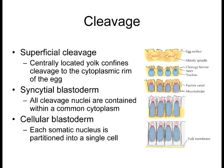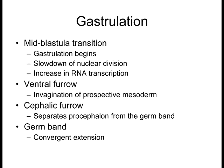Before cleavage, all nuclei are in one shared cytoplasm — this is called the syncytial blastoderm. Once they all get partitioned off, it's called cellular blastoderm, where individual single cells start interacting with one another. The mid-blastula transition, where the mitotic rate slows down, is where Smaug helps — it is involved right around that transition, slowing down maternal RNA translation while increasing genomic RNA transcription.